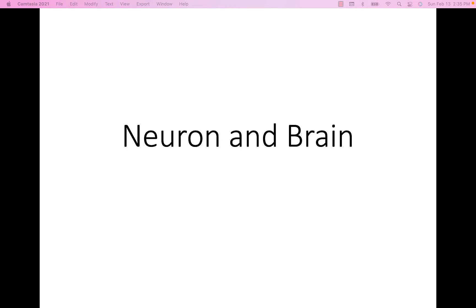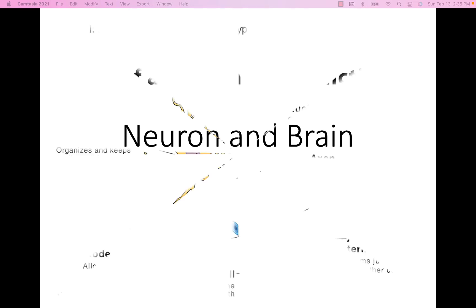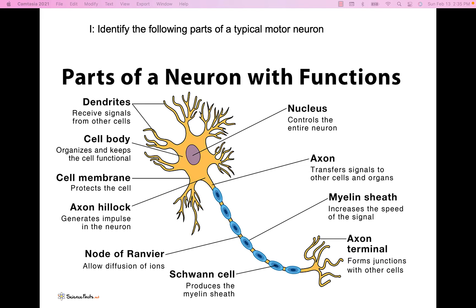Going ahead and getting started with objective 1, we need to be able to identify the following parts of a typical motor neuron. These types of neurons are multipolar neurons, which we cover a little bit in lecture, so this should look relatively familiar to you.